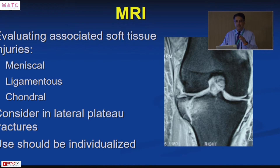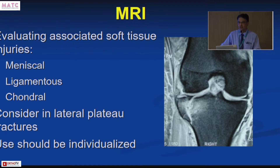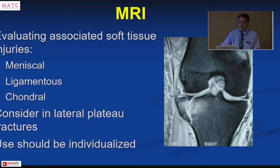MRI is now being increasingly used for proximal tibial fractures because the literature has shown there may be significant soft tissue injuries — whether meniscus, ligaments, or chondral injuries. However, you need to individualize its use. Injuries are more likely to be associated with lateral tibial fractures, so any lateral plateau fracture should have an MRI, and associated injuries should be treated, as leaving them will not give a good result.